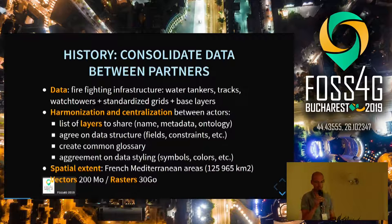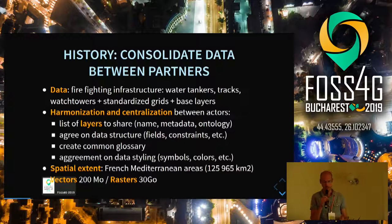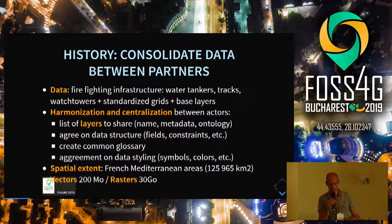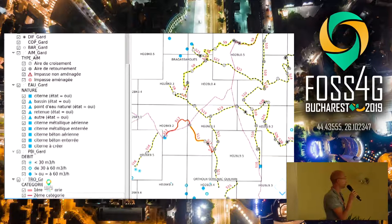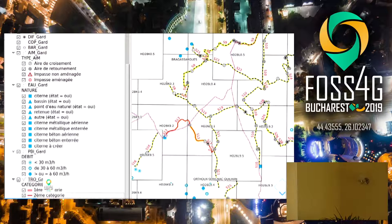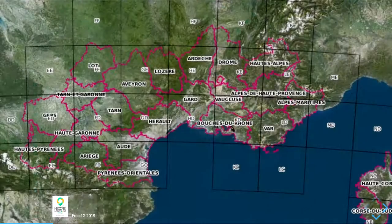The spatial extent is the French Mediterranean area, around 100,000 square kilometers. The data represents about 200 vector layers and 30 gigabytes for rasters. You can see in the screenshot some water tanks, tracks, and the grid they use in the field to locate different structures and identify areas needing attention. This is the main spatial extent of the project.